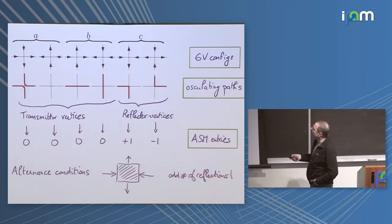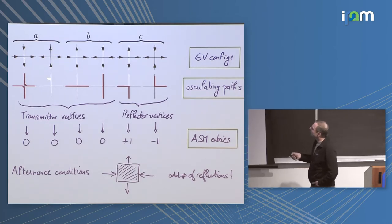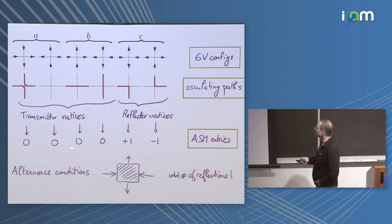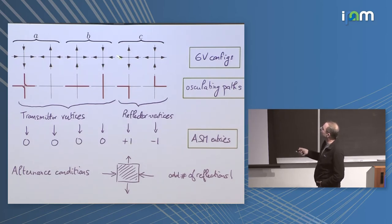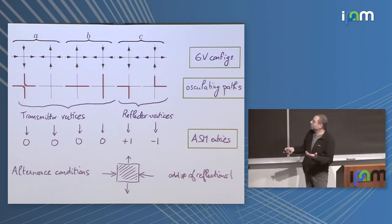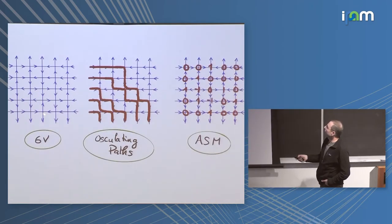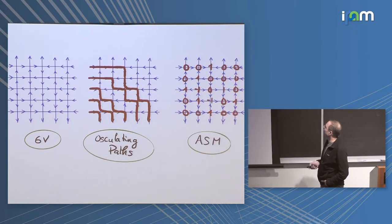The connection with alternating sign matrices is a very simple property of those vertices. At each vertex, either the arrows are transmitted — if they were arriving from the left they continue horizontally and vertically — or they are reflected. The last two vertices are reflected. You put a zero on your vertex whenever it's transmitted, and when it's a reflector there will be a one and a minus one: if you start entering it's a one, but if it's outgoing then it's a minus one. So instead of drawing arrow configurations, you can draw these ASMs. This is the arrow configuration, this is the osculating path configuration, and this is the alternating sign matrix.